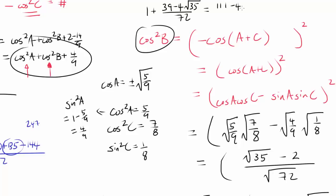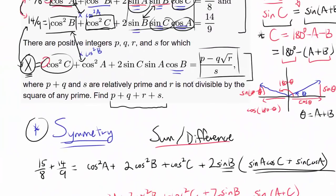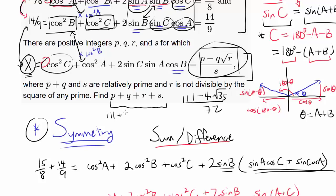Now we compute x equals cosine squared A plus cosine squared B plus 4 over 9. That's 5 over 9 plus 4 over 9 plus our expression for cosine squared B, which is 1 plus (39 minus 4 root 35) over 72, giving 111 minus 4 times square root of 35 over 72. So p equals 111, q equals 4, r equals 35, s equals 72, and p plus q plus r plus s equals 111 plus 4 plus 35 plus 72 equals 222.